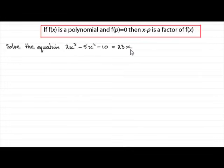Now the first thing I'd want to do is make sure that my cubic equation equals zero. In this particular one it doesn't, it equals 23x. So I'm going to subtract 23x from both sides and write this in descending powers. So we have 2x cubed, then minus 5x squared, minus 23x, minus 10, and it equals zero.